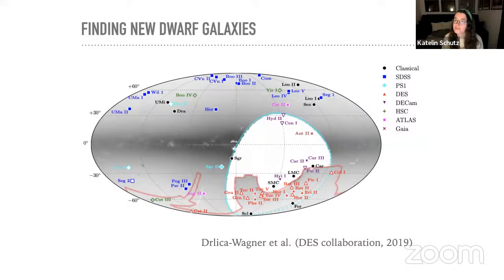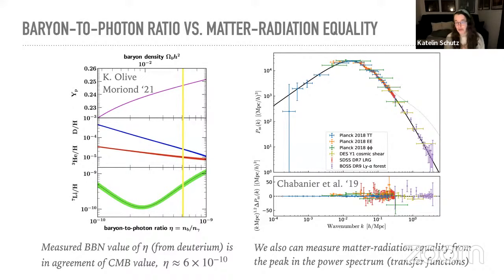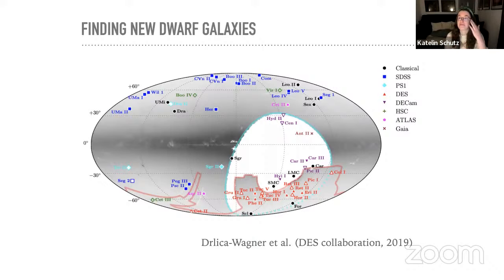Question from the chat: do we probe the Lyman alpha forest signature in terms of a power spectrum, usually shown on a P(k) plot? Yes, we do. For example, the purple points on the earlier slide show the BOSS year-nine Lyman alpha forest power spectrum. We've discovered more and more dwarf galaxies — they tell us that whatever was happening in the very early universe when these modes entered the horizon could not have messed up the formation of these very small dwarf galaxies. We're getting better at understanding this quantitatively, accounting for complicated baryonic physics and the galaxy-halo connection.